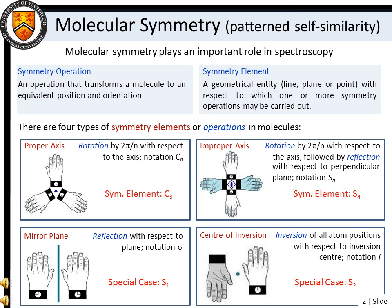Molecular symmetry can be described as patterned self-similarity. We can discuss symmetry in terms of symmetry operations, which transform molecules to equivalent positions and orientations, or in terms of symmetry elements, which are geometrical entities such as lines, planes, or points with respect to which one or more symmetry operations may be carried out. There are four types of symmetry elements, or operations, for molecules.